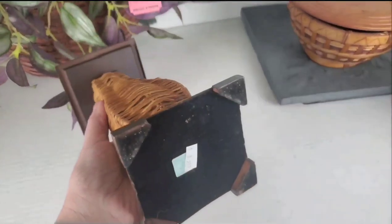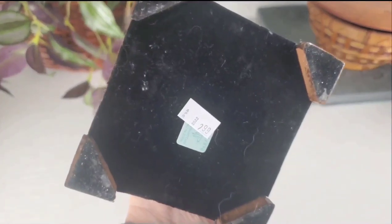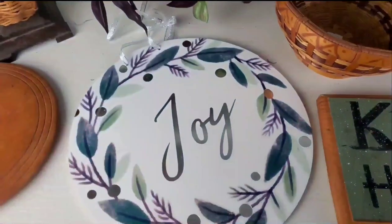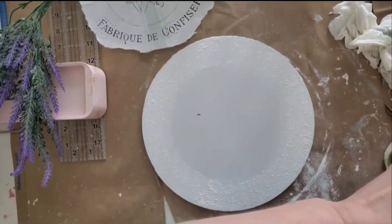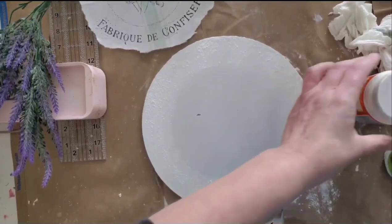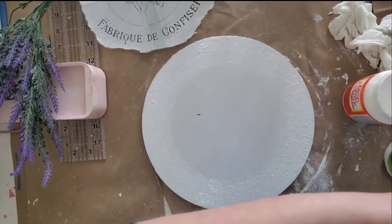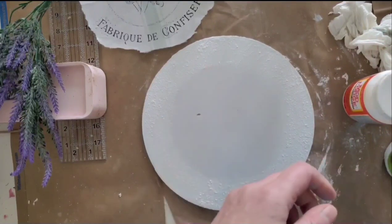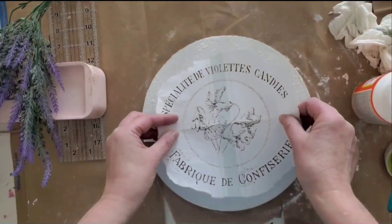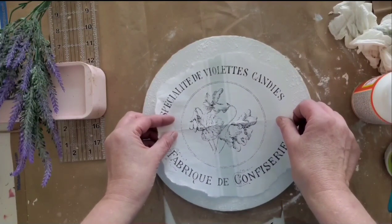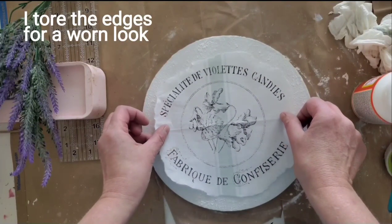I purchased this wicker candlestick holder for $2.99 and this little sign for $1.99. I did apply a little bit of the textured paint around the edges to cover up the two holes from the ribbon previously on here to hang it.